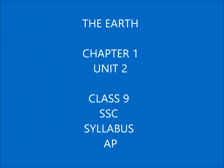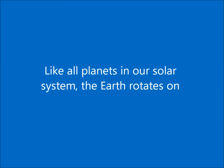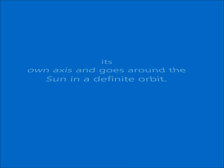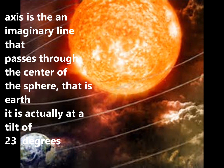In the ninth standard SSC syllabus, 'Earth as a Planetary Body' is the second unit. I'll read out the textbook and explain as I go along. Like all planets in our solar system, the earth rotates on its own axis and goes around the sun in a definite orbit. The crucial words here are 'own axis' and 'definite orbit.' An axis is an imaginary line that passes through the center of the sphere, that is, the earth.